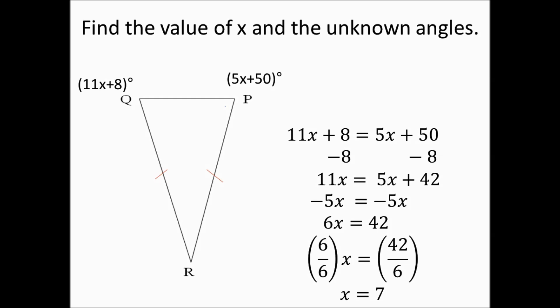Now we're asked to find the value of the unknown angles. We substitute 7 for X in both expressions. For angle Q: 11 times 7 plus 8 equals 77 plus 8, which equals 85. For angle P: 5 times 7 plus 50 equals 35 plus 50, which equals 85. Both angles check out at 85 degrees.